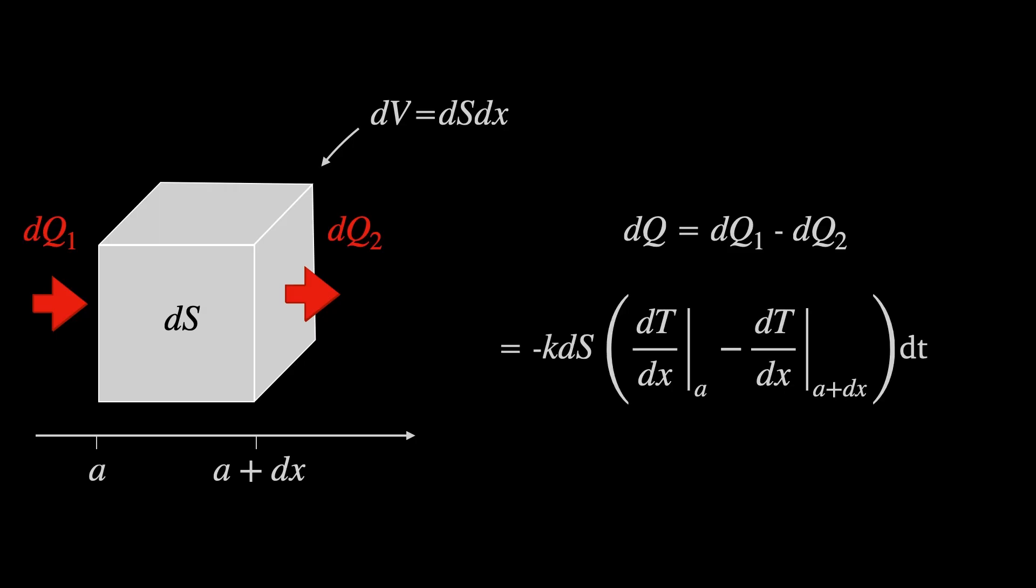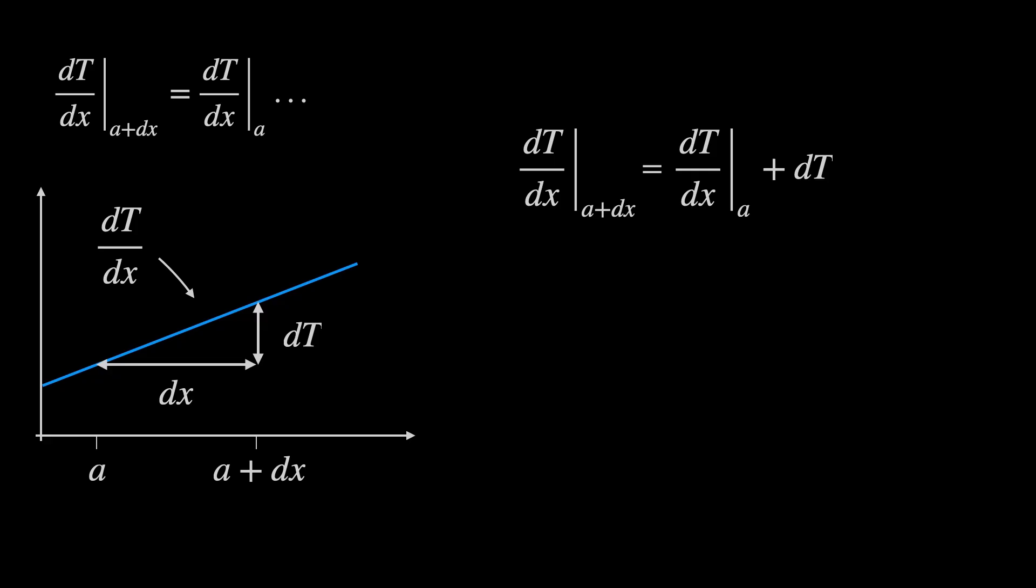Fourier's law applied to this volume gives us heat flux in and out, but we can make things easier with some work on this dT by dx at a plus dx term. Rather than dT by dx at a plus dx, we want something involving dT by dx at x equals a. Since dx is small, we can assume that dT by dx is approximately a straight line over this range. We know that the dT by dx term at x equals a plus dx will be whatever it was at x equals a, plus however much it's increased over the range dx, which we'll call dT. From basic calculus, we can get dT as the second derivative of T with respect to x evaluated at a multiplied by dx.